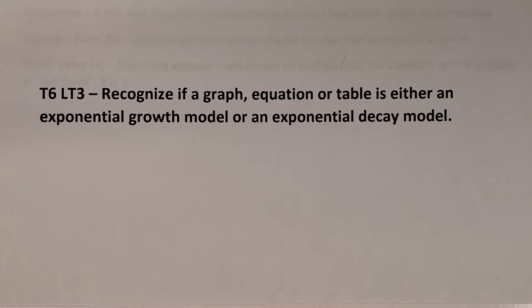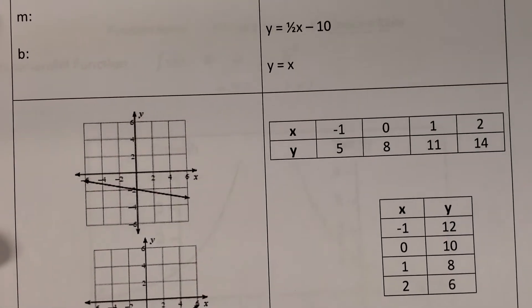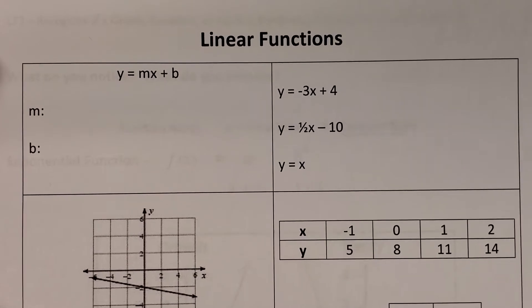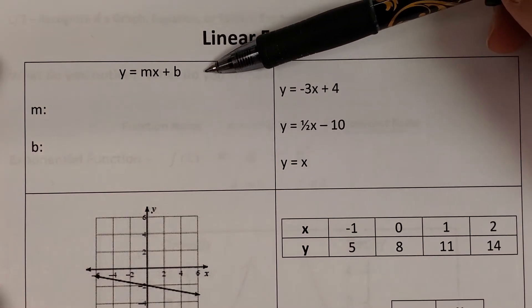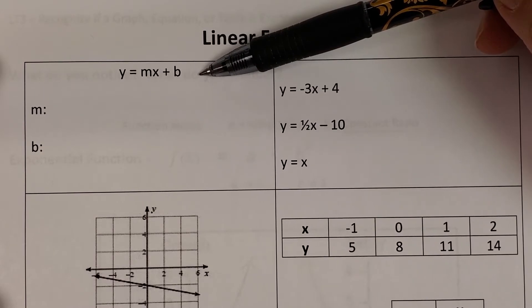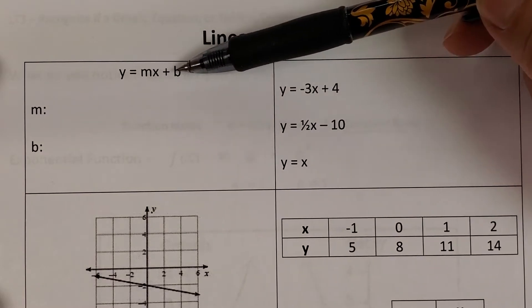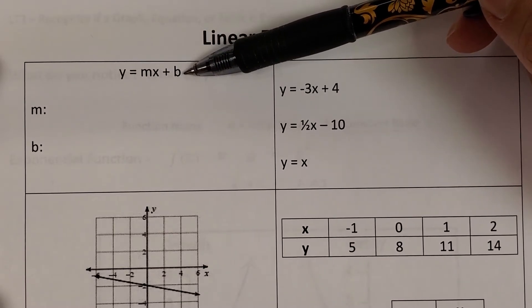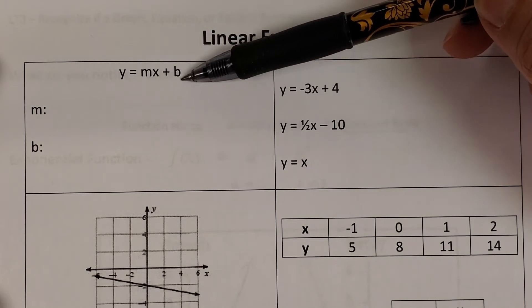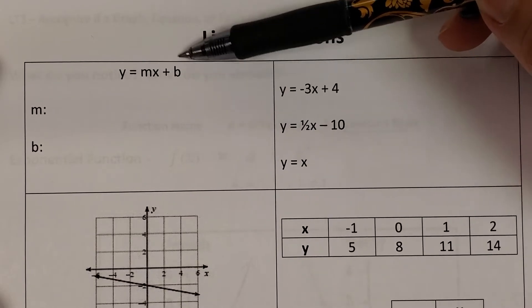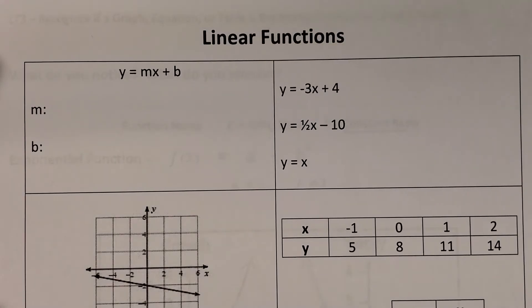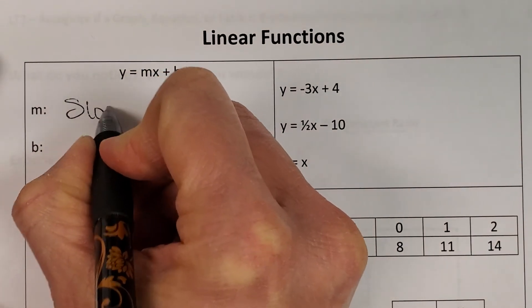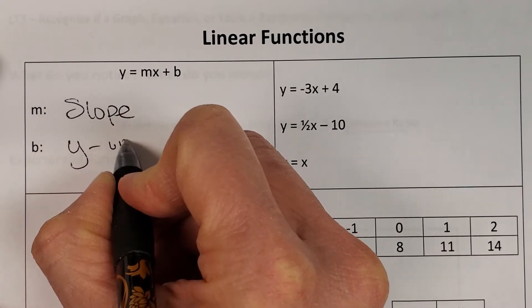Before we get into exponential growth and decay, I want to remind us of linear functions, because you need to be able to recognize the difference between a linear function and an exponential function to start off. Remember that y equals mx plus b is one of the three ways we learned to write linear functions. This is called slope-intercept form because m is the slope and b is the y-intercept of the line.